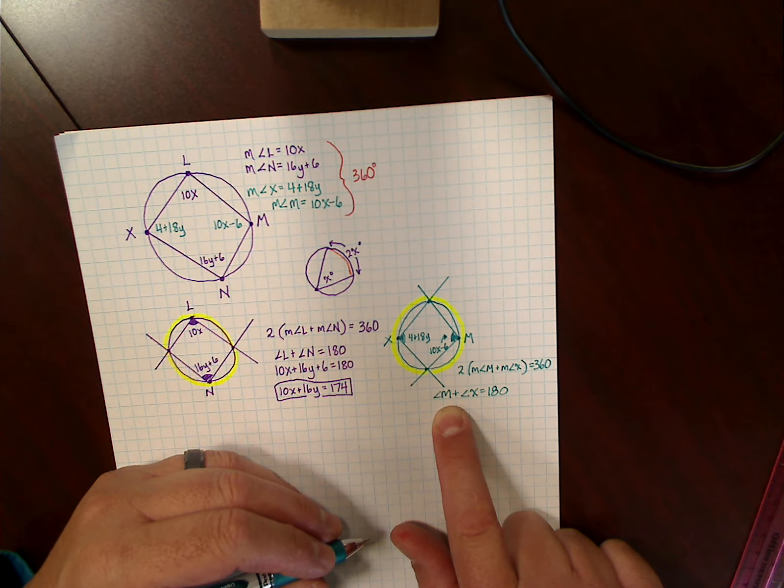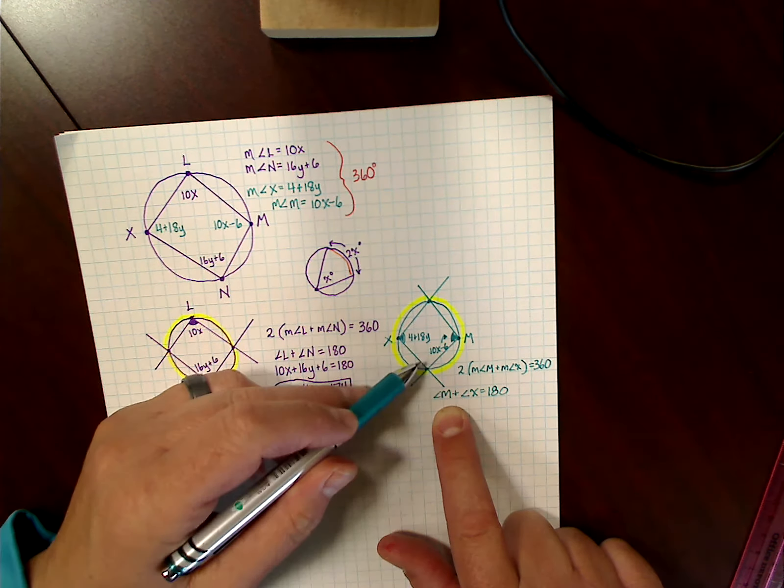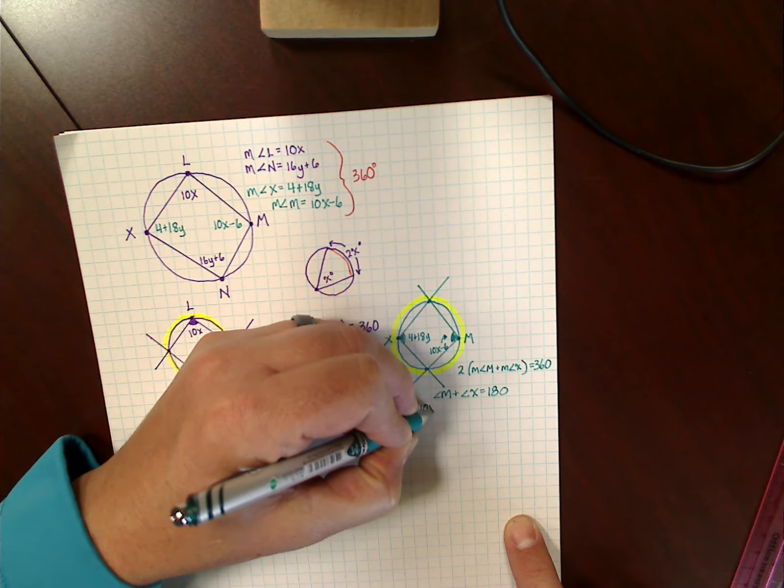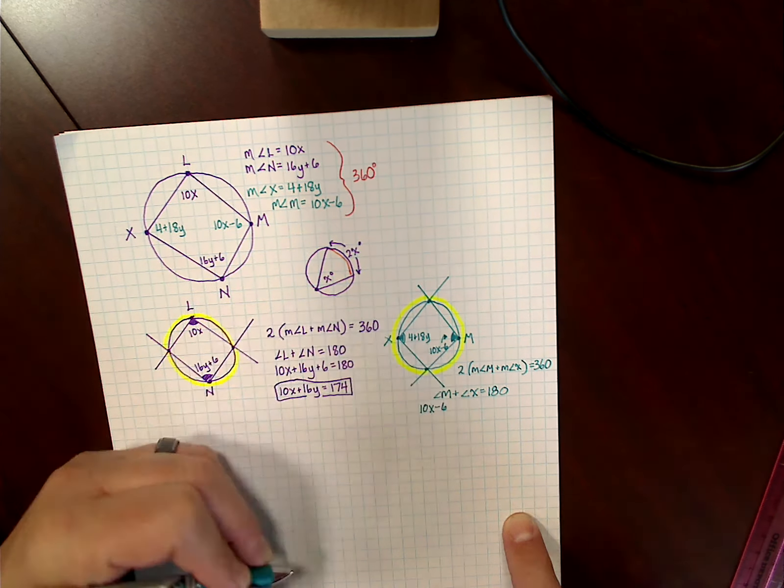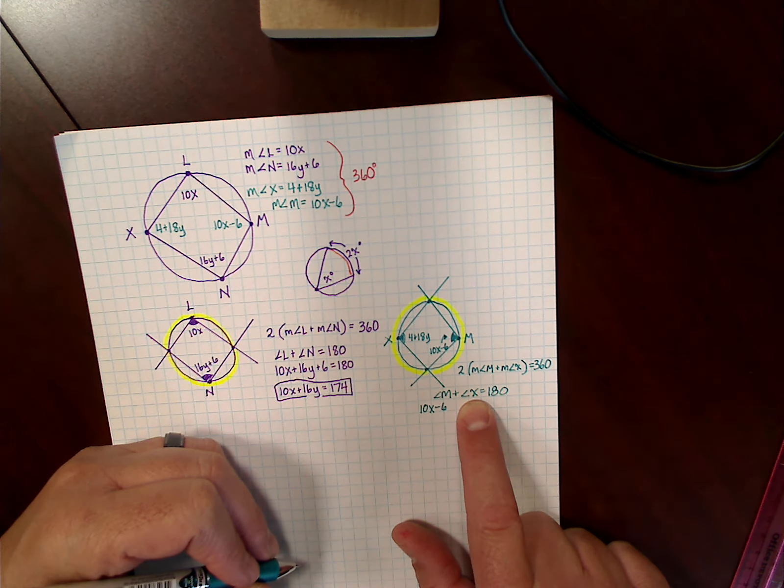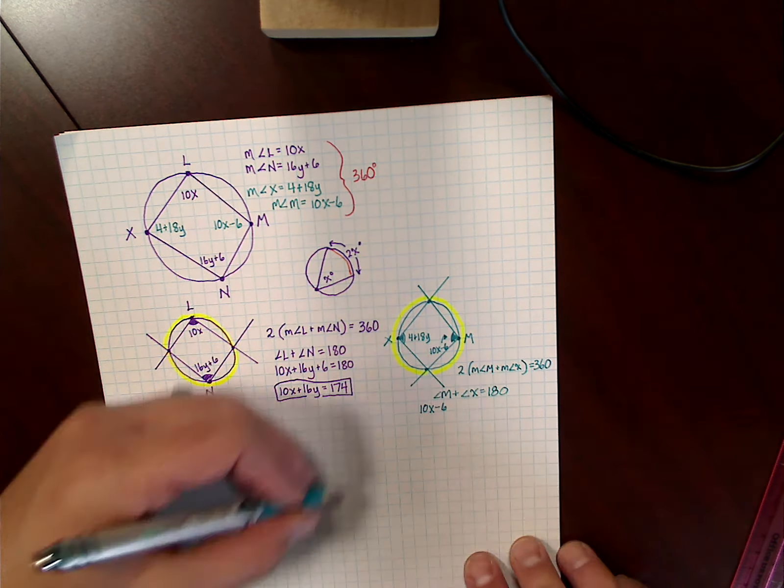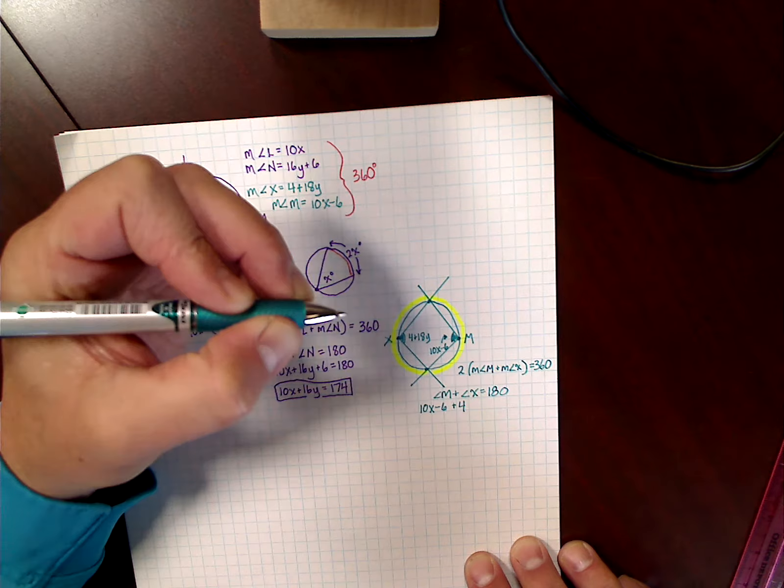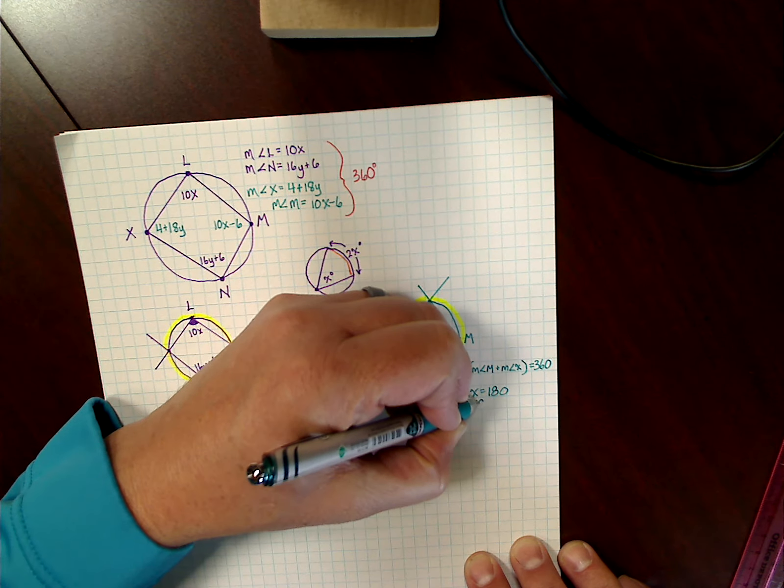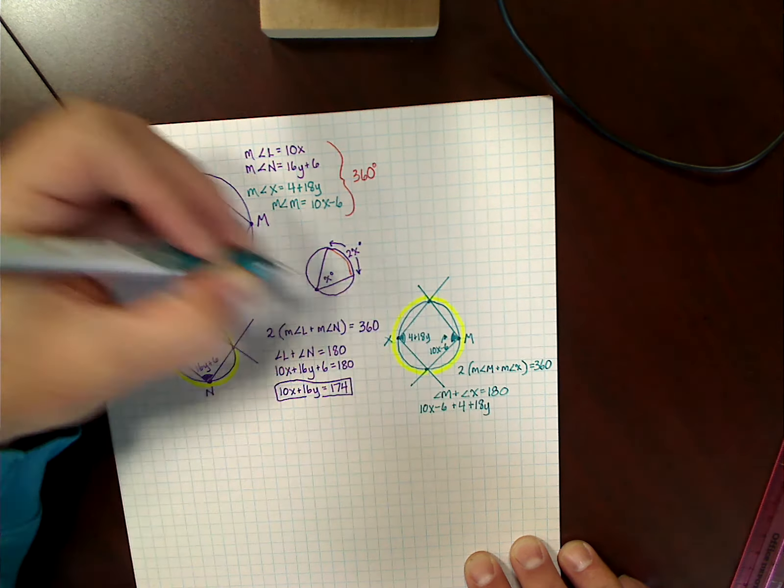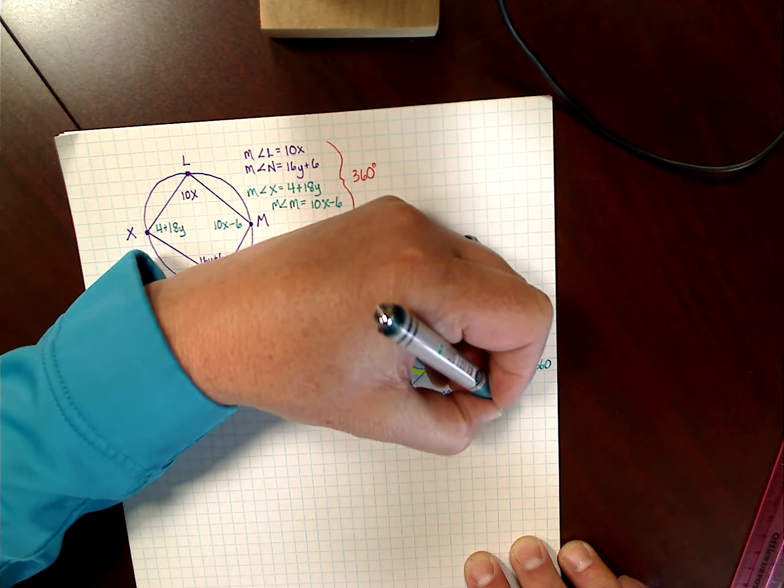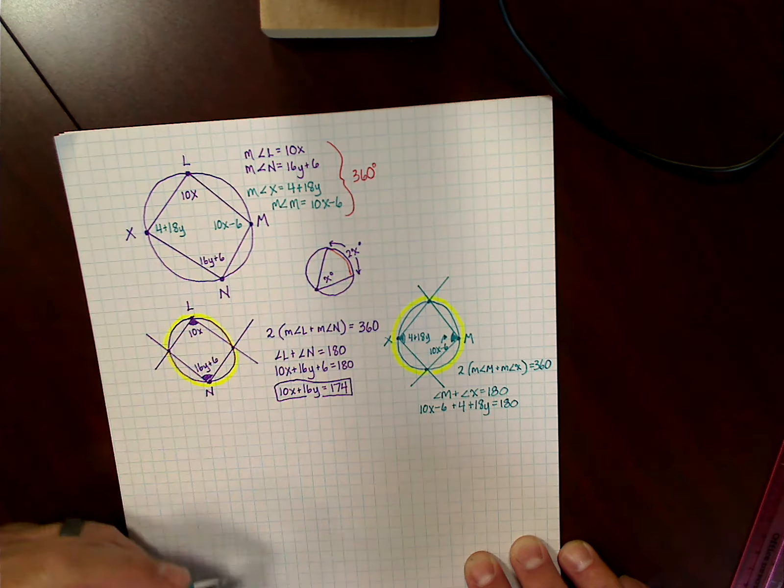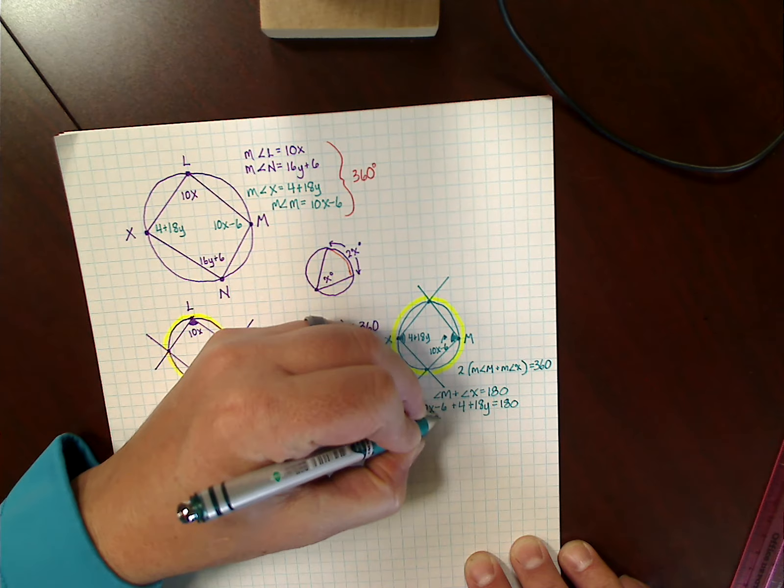Then I substitute the values for each variable. So angle M is 10x minus 6. And the expression that represents angle X is 4 plus 18y. And again, it's equal to 180 degrees.